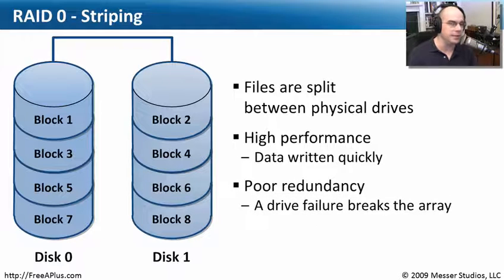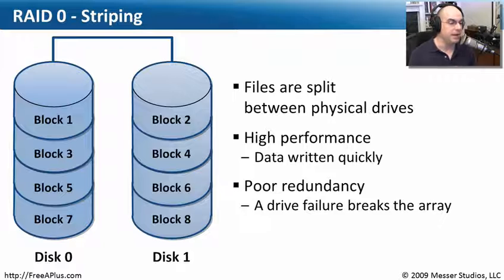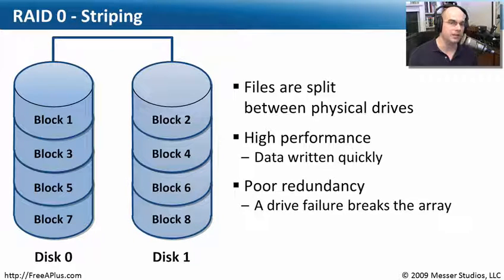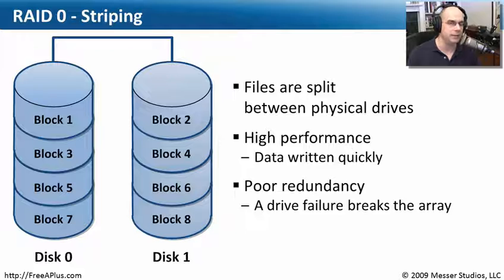But notice that if you lose a disk, that's it — the data is gone. There is no redundancy built into RAID 0. If you lose a drive, your RAID array is broken and your data is no longer available. If you're concerned about performance and using striping, make sure you have a really good backup, because as soon as you lose a disk your entire set of files is completely gone. There is no redundancy in a RAID 0 configuration.